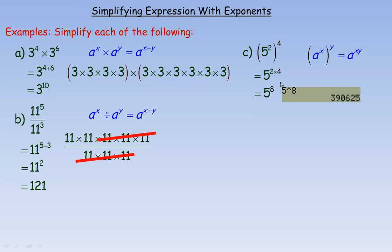The reason you multiply the exponents is because 5 squared raised to the power of 4 means there are four copies of 5 squared. Each 5 squared means two 5s multiplied, so with four of them: 2 plus 2 plus 2 plus 2 equals 8. There are eight 5s multiplied altogether — that's why you multiply the exponents. 5 to the power of 8 is 390,625 if you need the numeric value.